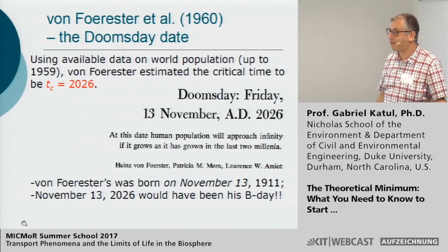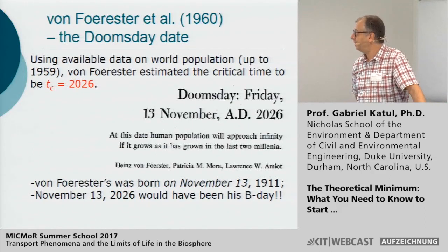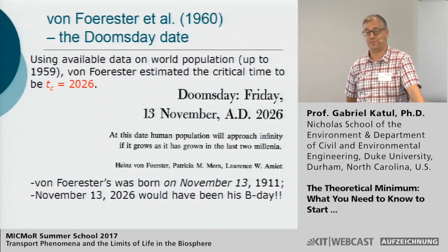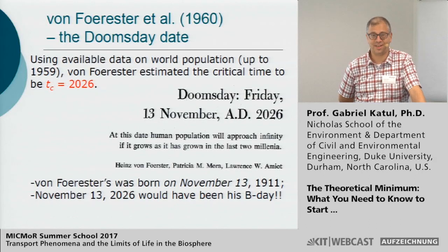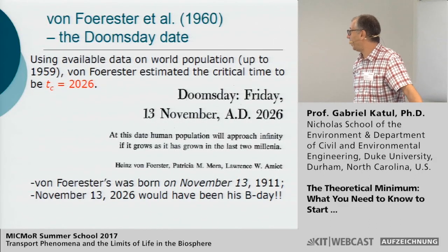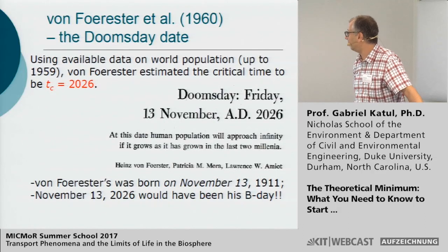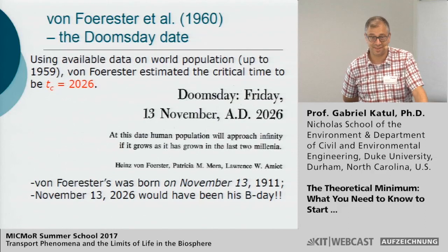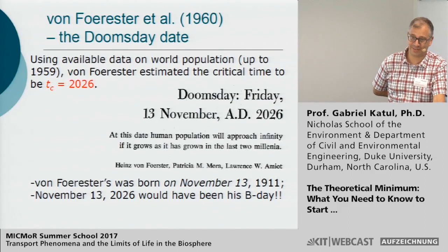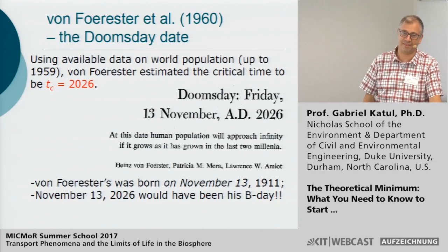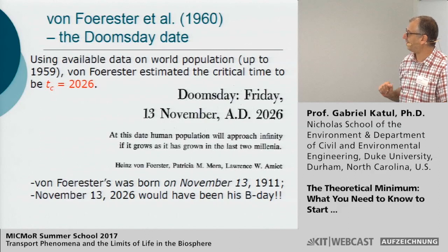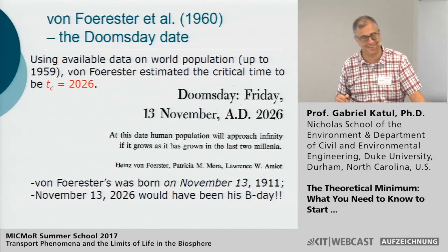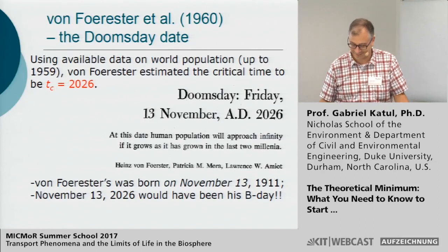What did Von Forrester calculate out of curiosity? He fitted his data set to the power law model and estimated the critical time would be 2026 — and the 13th of November specifically because, as it turns out, that date would have been his birthday (he was born November 13, 1911). That gives you a sense of the style of the paper — he snuck it into Science. The co-authors with Von Forrester happened to be two undergraduate students taking his class. He used only about 20 data points.